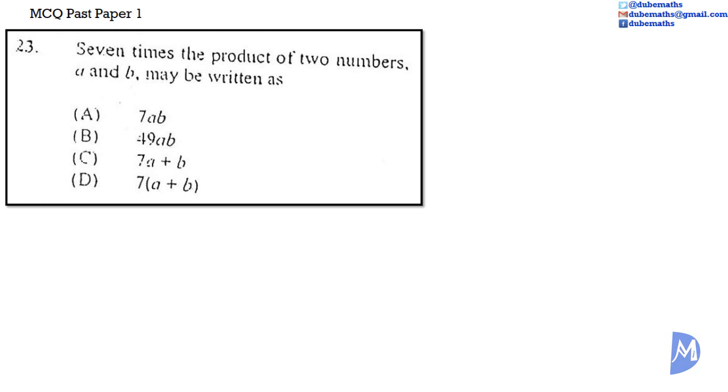7 times the product of two numbers, A and B. The product is a result of multiplication. So the product of AB is A multiplied by B, or simply AB. 7 times this is 7 multiplied by AB, or just 7AB. Thus the answer is A.